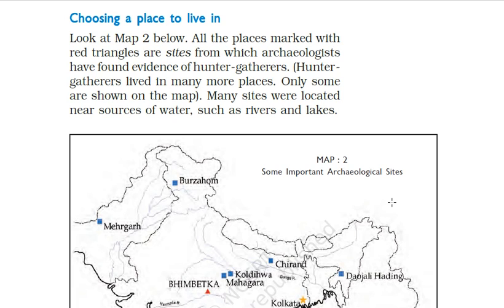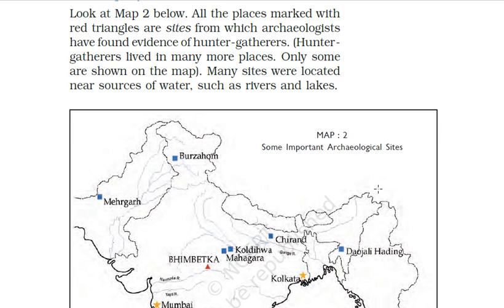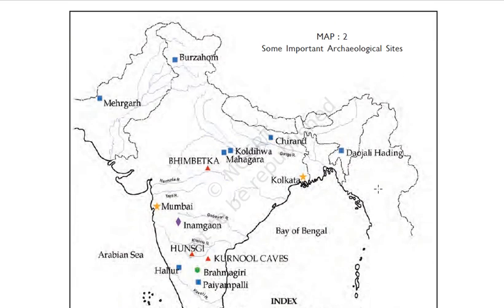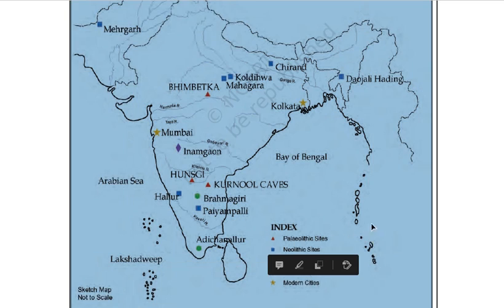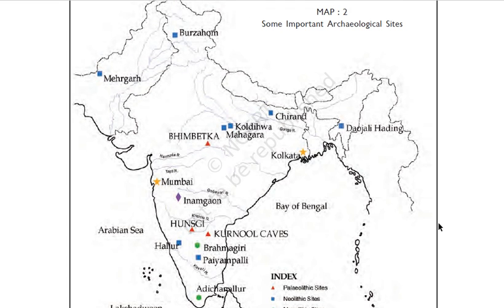The red triangles on the map serve as markers of sites where archaeologists found evidence of hunter and gatherers. The red triangle indicates a paleolithic site. Paleolithic means the Stone Age.